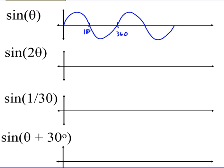If I think about sine of 2θ, my normal period is 360, and the 2 is going to do a horizontal shrink. So I take 360 and divide by 2 to get a period of 180, which means by the time I hit 180, I've already completed an entire cycle.